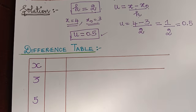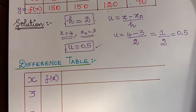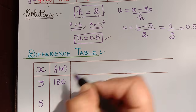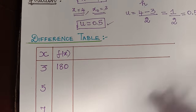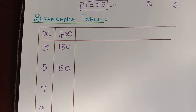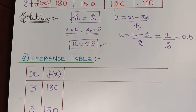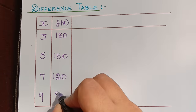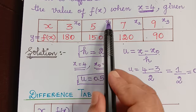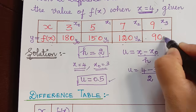The next column is for y, that is f(x). For x=3, y=180; for x=5, y=150; for x=7, y=120; for x=9, y=90. In the table, these are x-naught, x1, x2, x3 and correspondingly y-naught, y1, y2, y3.